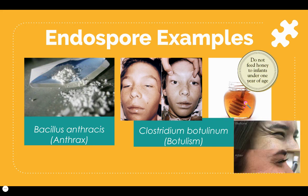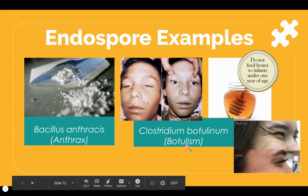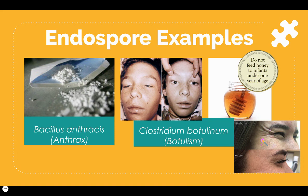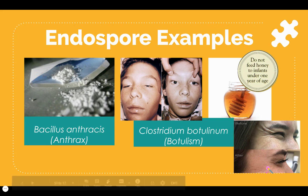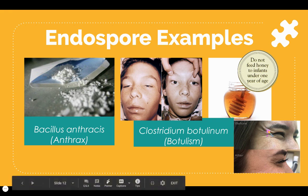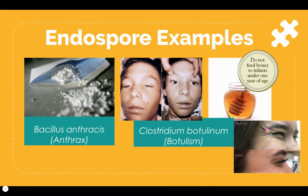Botulism can also be used to treat wrinkles for cosmetic purposes. If you inject botulism, it temporarily relaxes the facial muscles. The body then fights off that toxin and wrinkles eventually return, but this is an example of how endospores are used for cosmetic reasons.